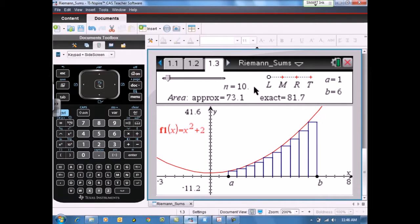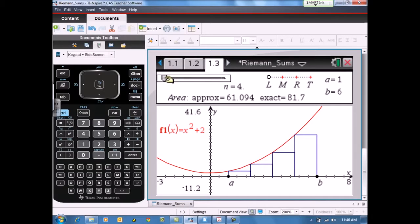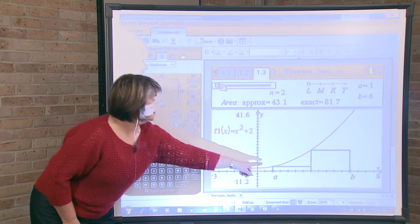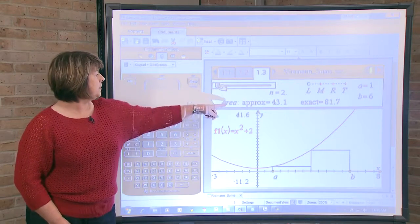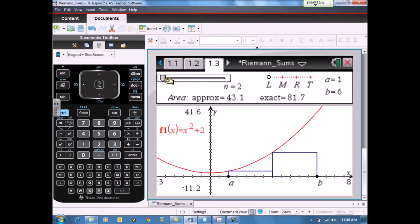Notice that we are set on 10 rectangles. So the first thing the student needs to be able to do is grab the slider bar and move it to N equals 2. I will demonstrate that to you. So now the students will see two rectangles with left endpoints as the approximation method. They see the area approximation, that would be the sum of these two rectangles, the areas of these two rectangles, as well as the exact area under the curve.